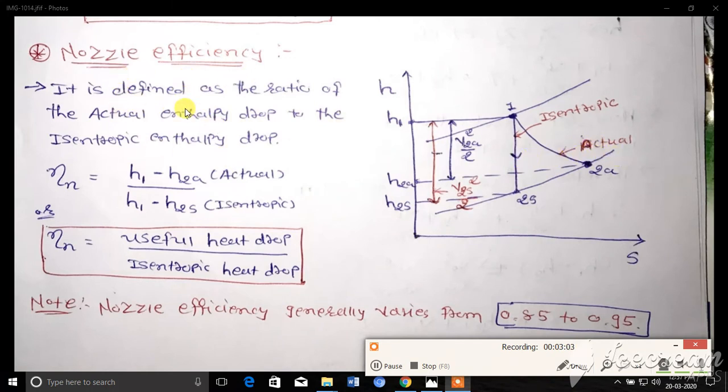Nozzle efficiency is defined as the ratio of the actual enthalpy drop to the isentropic enthalpy drop. This diagram is also called the Mollier diagram, in which we are representing enthalpy on the y-axis and entropy on the x-axis. You can see due to the friction, our enthalpy drop is going to reduce from H2S to H2A, and due to that our velocity is also going to reduce. Ultimately due to the friction we will get less velocity at the exit compared to the standard condition or due to isentropic expansion.